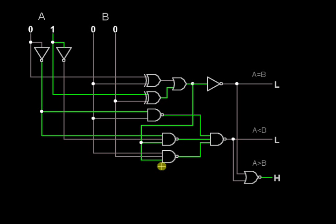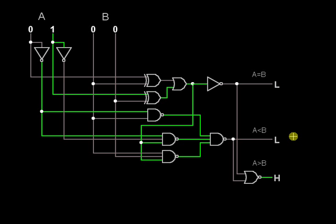All three outputs of the three NAND gates are high. These are fed to a final NAND gate where all three inputs are high, so the output is low — this condition is false. A is not less than B. If the first condition (A equals B) is false and the second condition (A less than B) is also false, then automatically the third condition is true — A is greater than B. The NOR of the first two outputs is high, confirming A greater than B output is high.